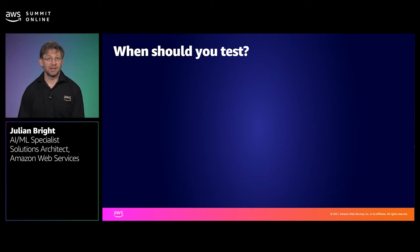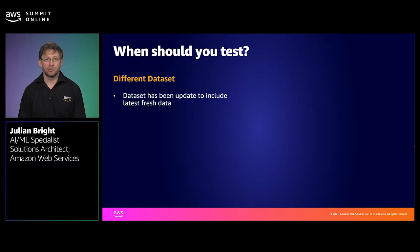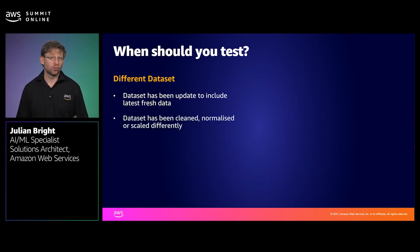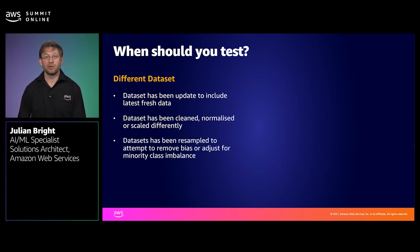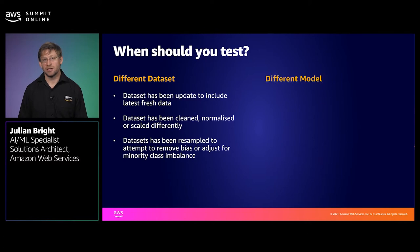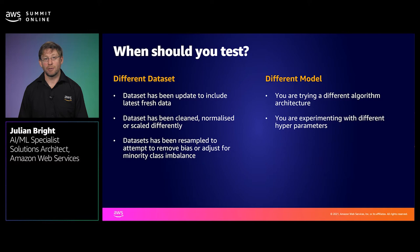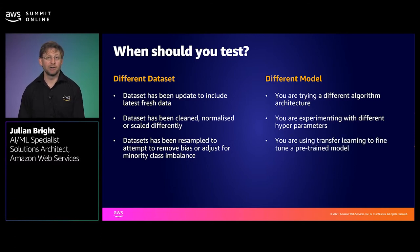So when should you perform an A-B test? The first case is when you have a different data set. This could be because your data set has been updated to include the latest fresh data, or you might have applied some new cleaning, normalisation or scaling, or perhaps you've resampled the data to adjust for class imbalance or remove bias. The second case is when you have a different model — you might be trying a different algorithm architecture such as a new deep learning model, running a hyperparameter optimisation job to tune settings like embedding size or learning rate, or using transfer learning to fine tune a pre-trained NLP or computer vision model.